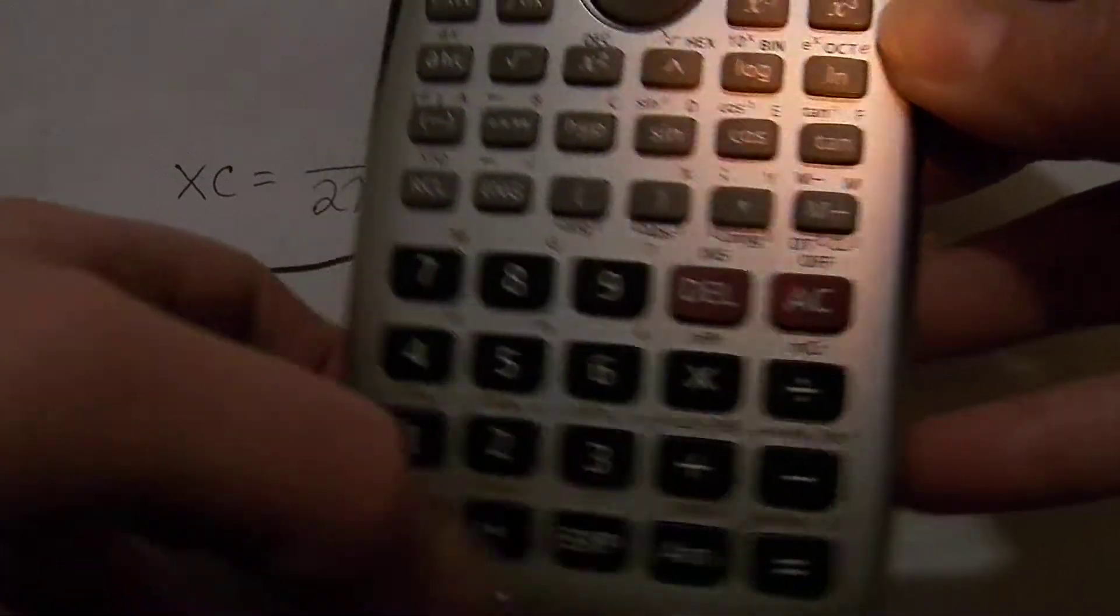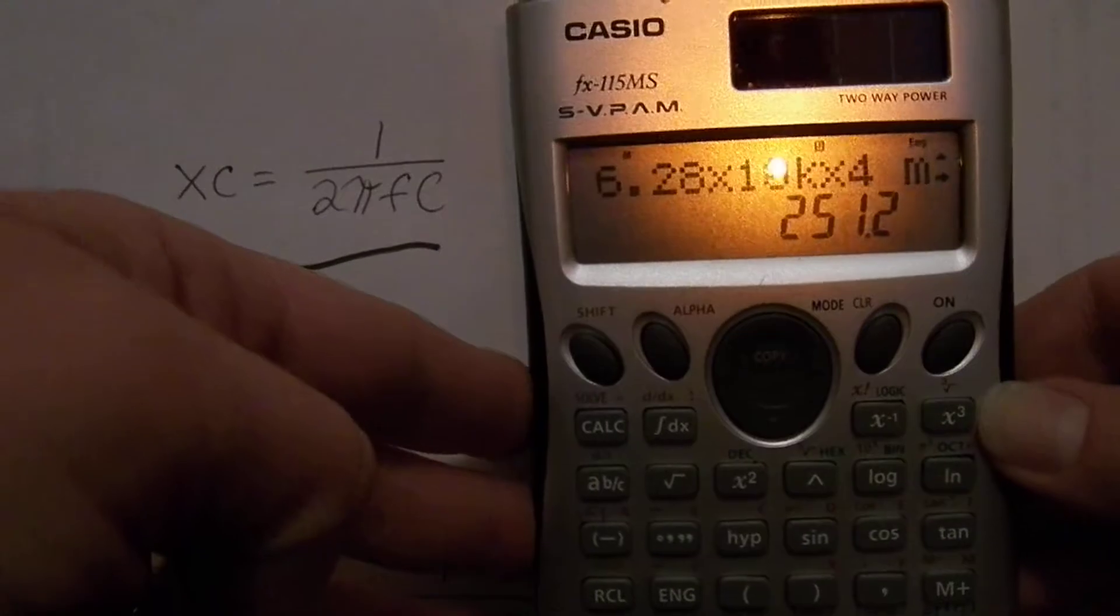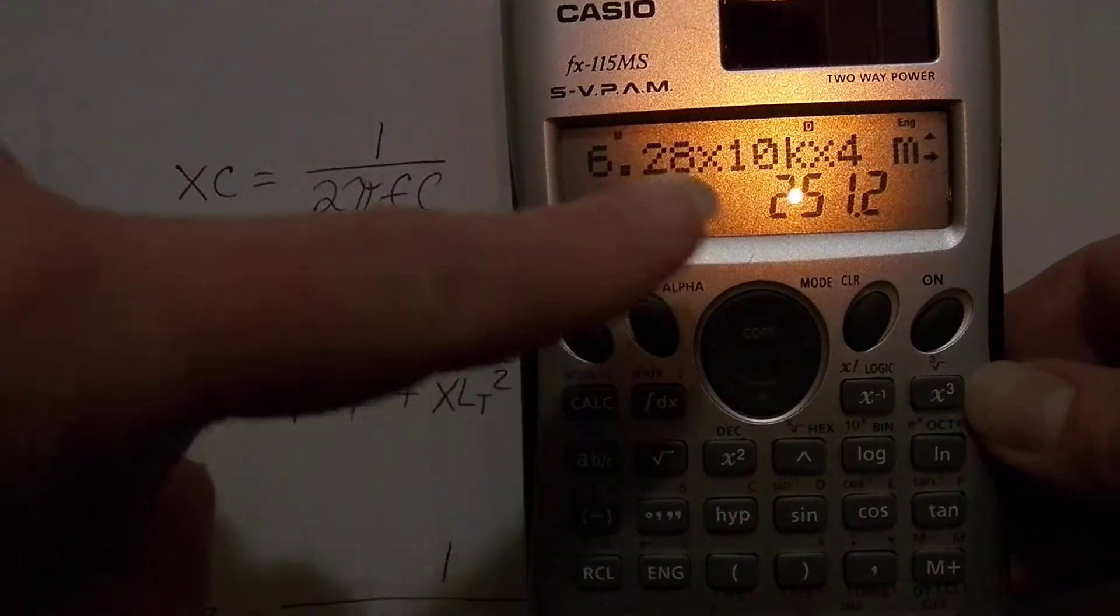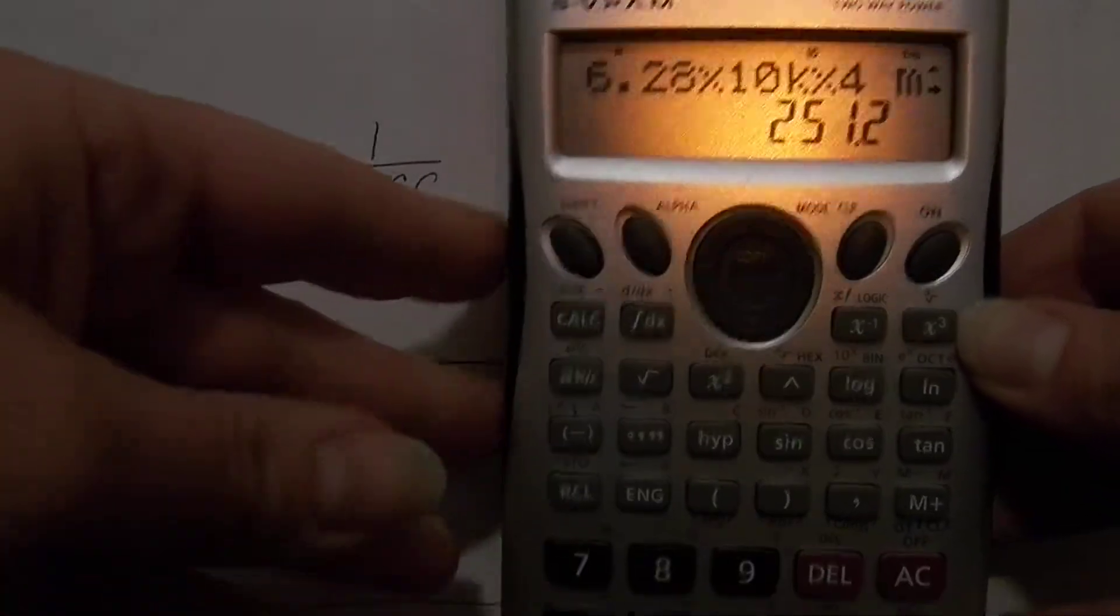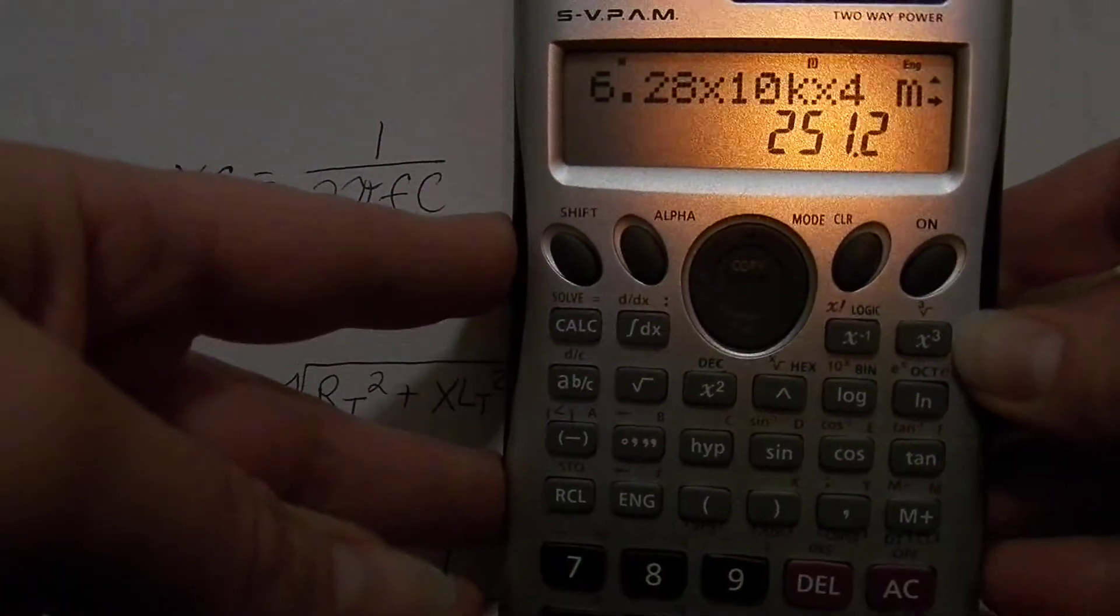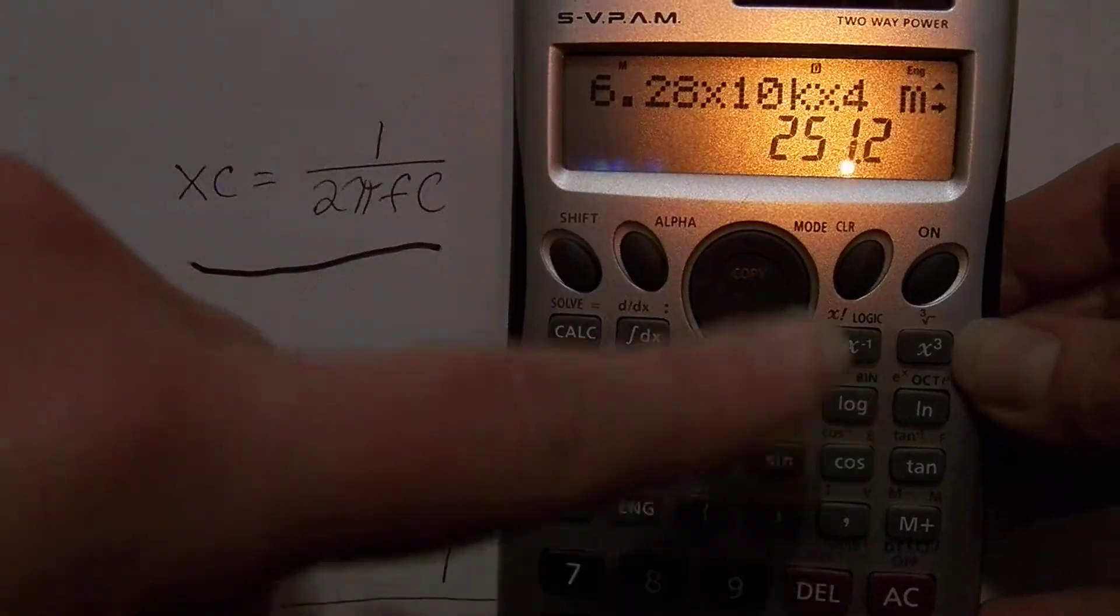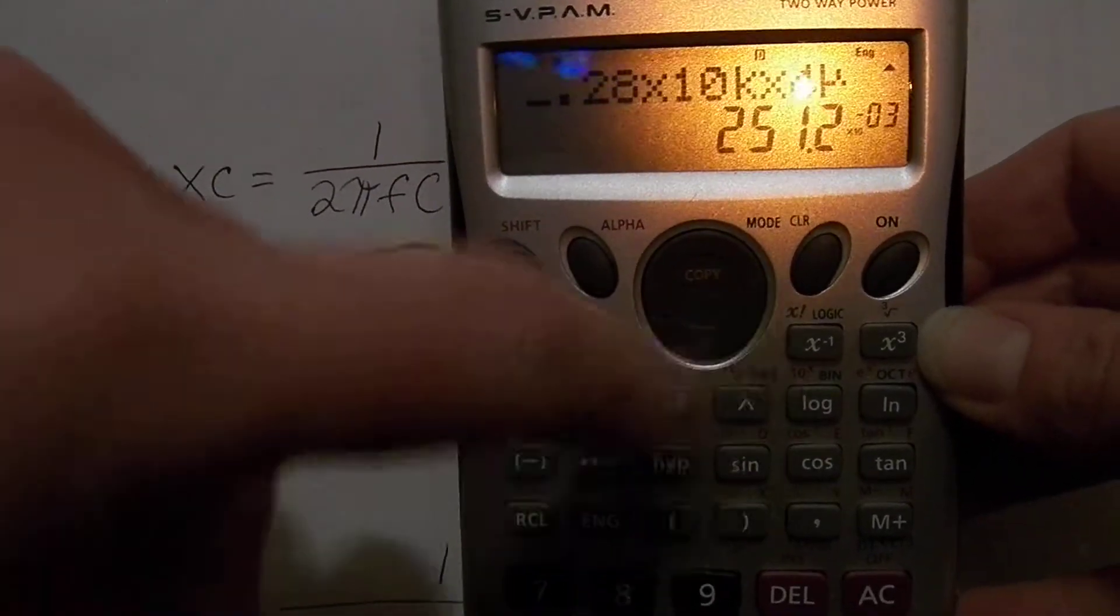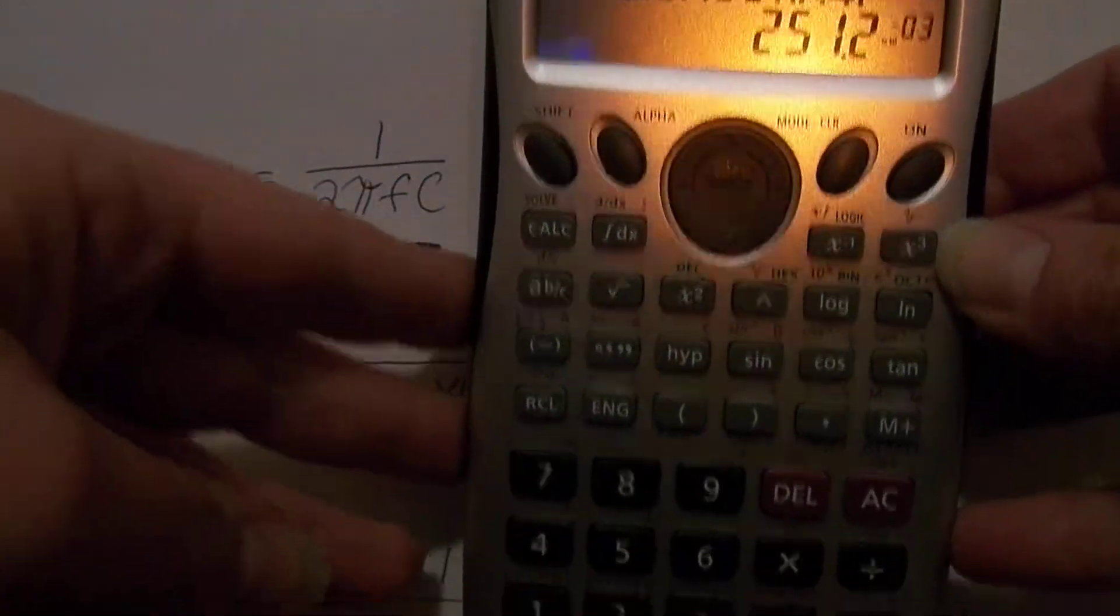And we're going to press equals and we're going to get a total number there of 251.2 million. And you can see the numbers we put in: 6.28 times 10k times 4 micro. And the reason you don't see quite the end of that is that there's just not enough space on the screen to show it to you. But if you use your sideways one here, you would be able to see your entire calculation. There's your micro right there.